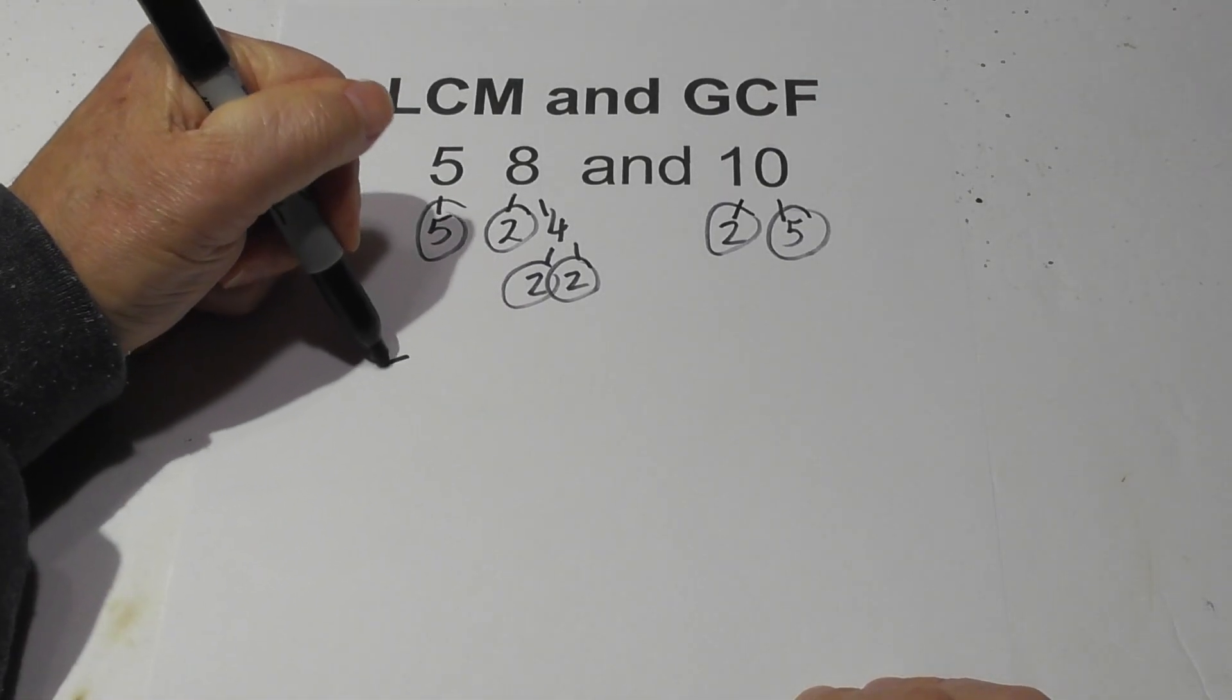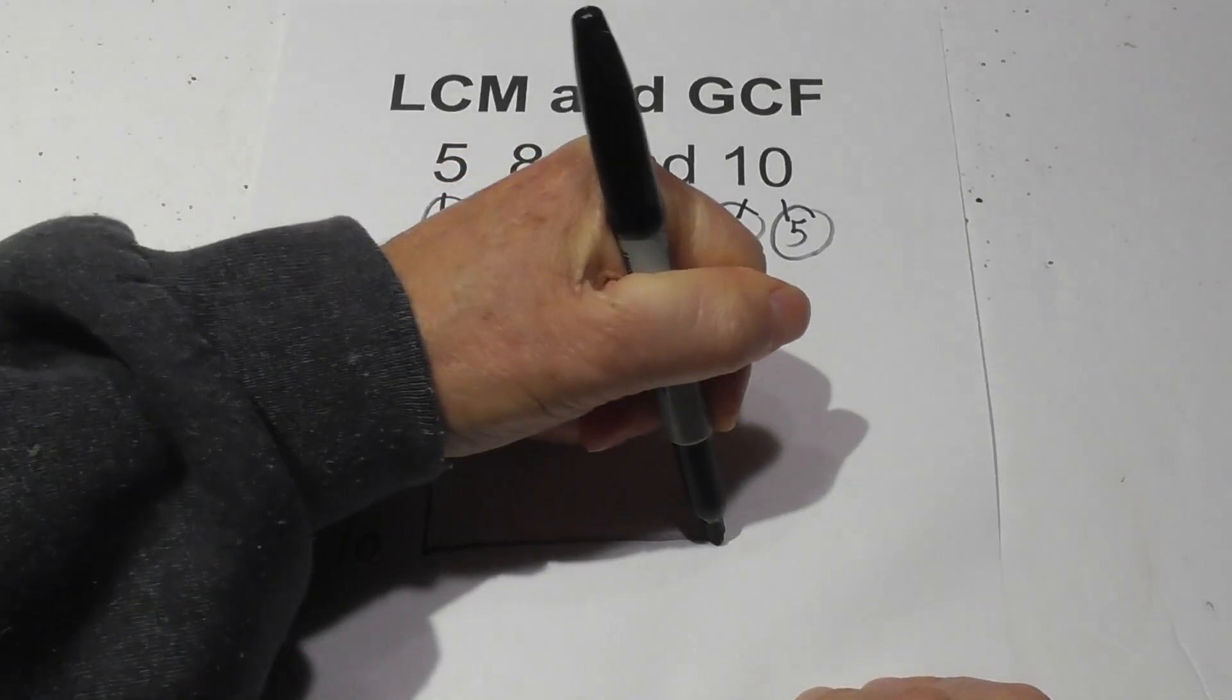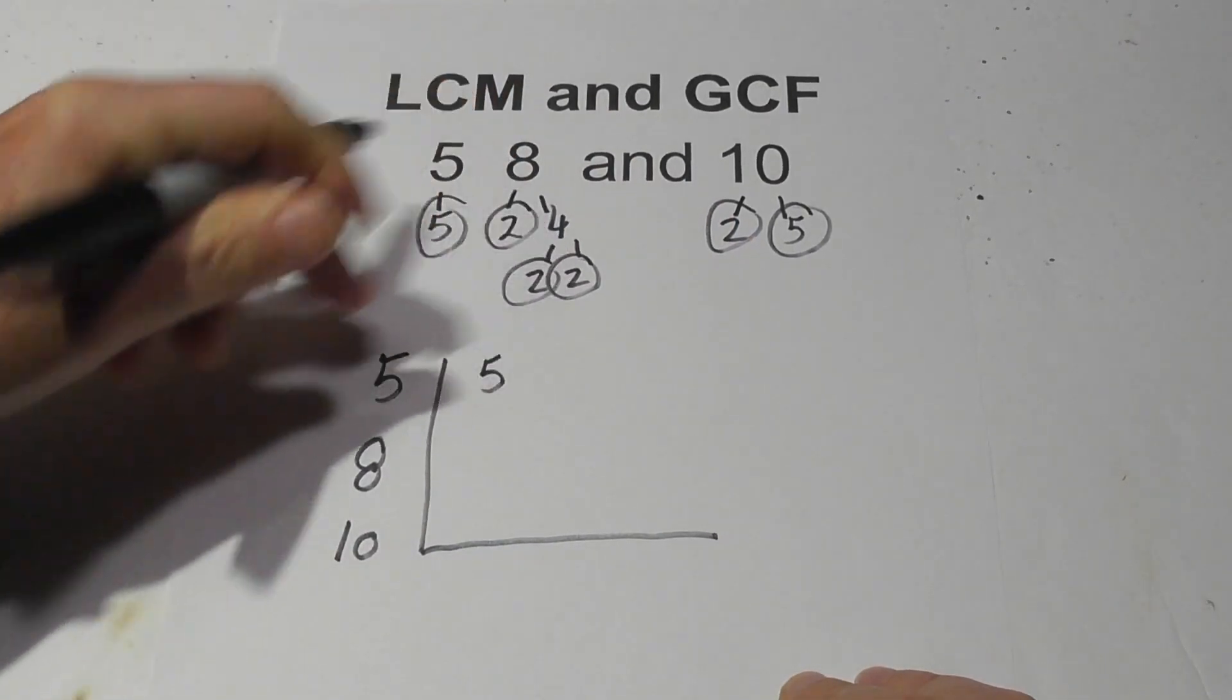Now, I create a chart. This just keeps everything nice and organized, and I'm going to write the prime numbers.